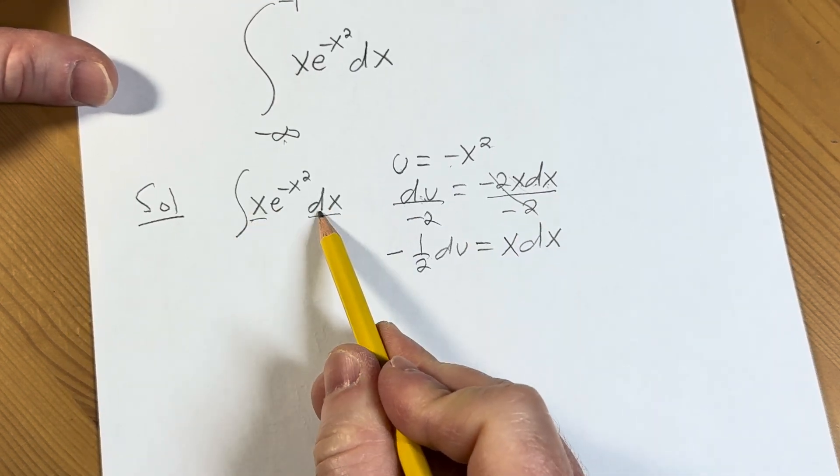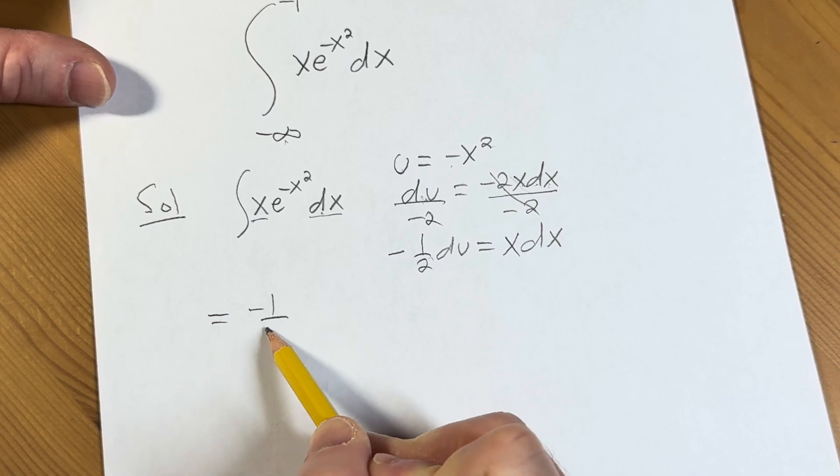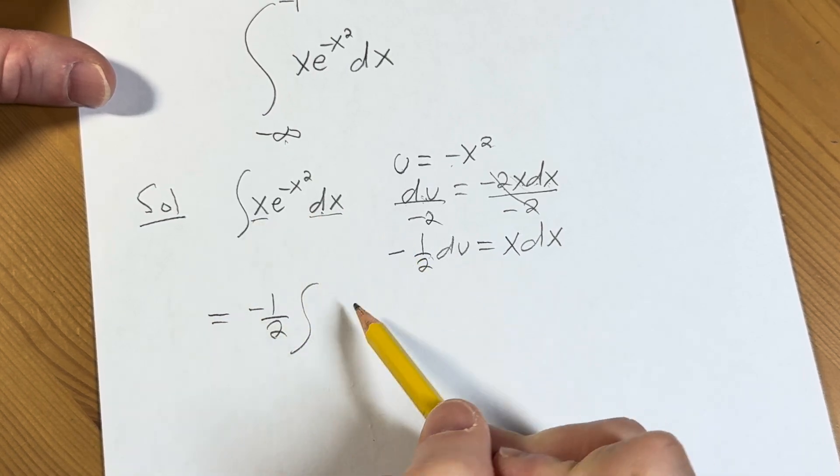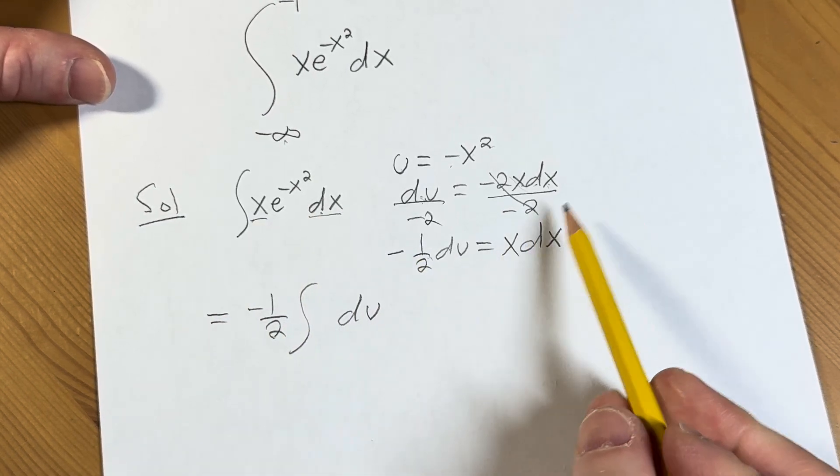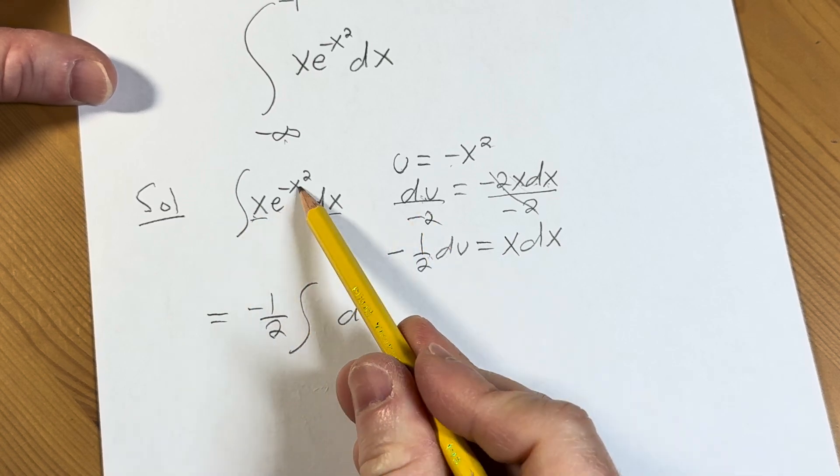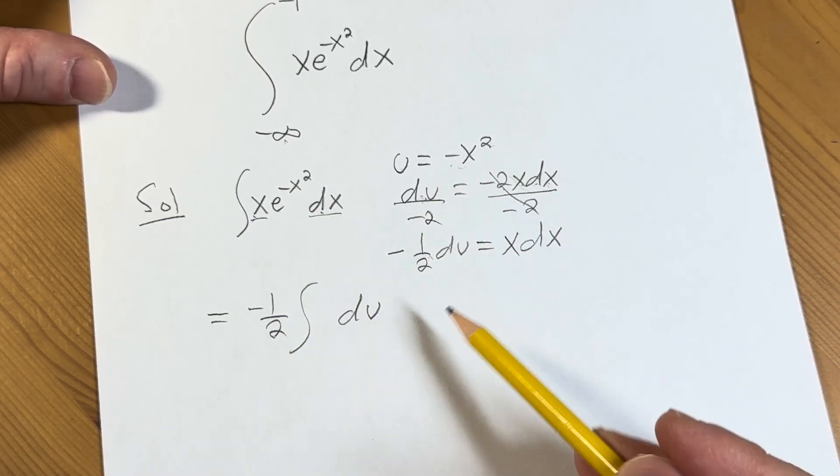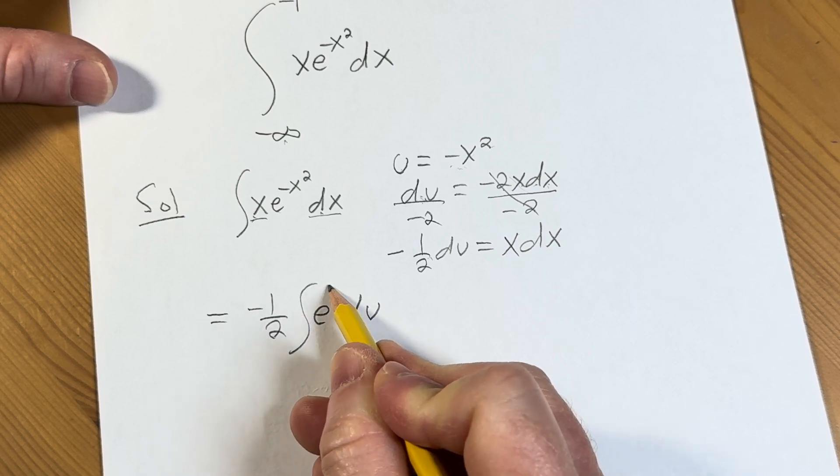Okay, so x dx is negative 1 half du. So this is negative 1 half, and then du. All we've done so far is replace the x dx. We're left with e to the negative x squared. Well, negative x squared is u. So this is going to be e to the u.